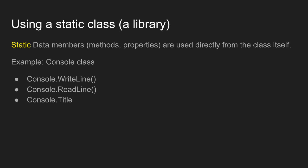For example, let's take the console class. The console class contains a library of methods, like the WriteLine method, Write method, ReadLine, ReadKey, etc. And then it has some properties, like a title property. All of these components are static data members.